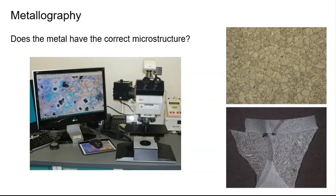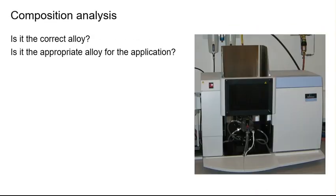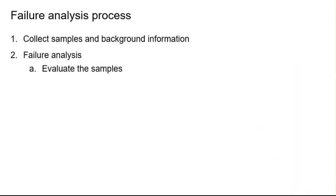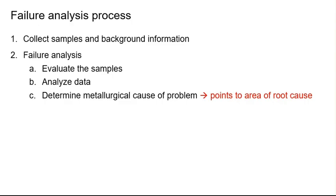Metallography is performed to determine whether the metal has the correct microstructure. Composition analysis is used to determine whether the alloy is correct and if it's the appropriate alloy for the application. And tensile and hardness testing are used to determine whether the mechanical properties meet specifications. After the analyses are complete, the next steps are to analyze the data and determine the metallurgical cause of the problem, which points to the area of the root cause. Then the final step is to identify the root cause of the problem based on the information from the failure analysis.